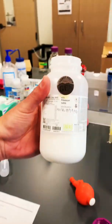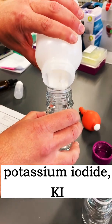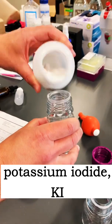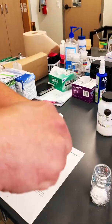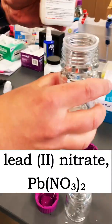Alright, so we're going to put in some potassium iodide just into a bottle. We'll call that good. Alright, in this bottle we've got lead(II) nitrate. Let's pour that